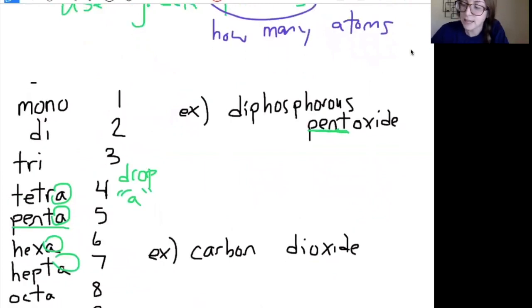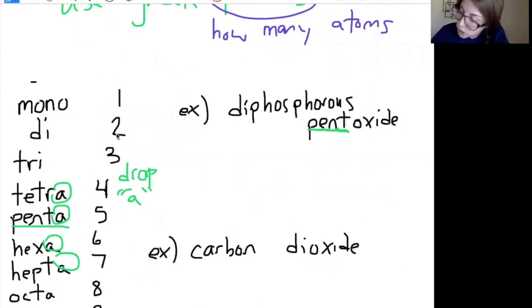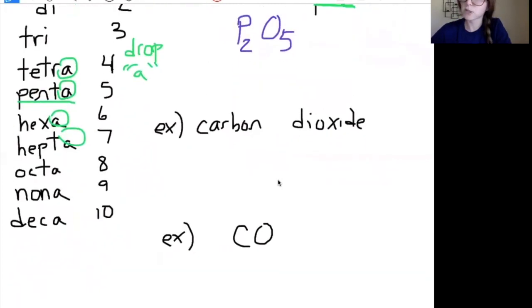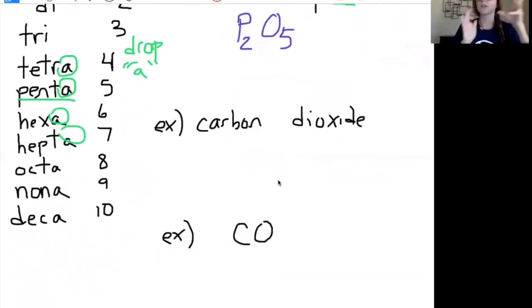Diphosphorus is telling me I have, if we look over here, di means two, I have two phosphoruses, P2. Pentoxide, pent is telling me I have five, five oxygens. That's it. No crisscrossing, no switching, no reducing, nothing. I just trusted the prefixes, made them the subscripts because those numbers down below, two and five, are what tell me how many atoms.